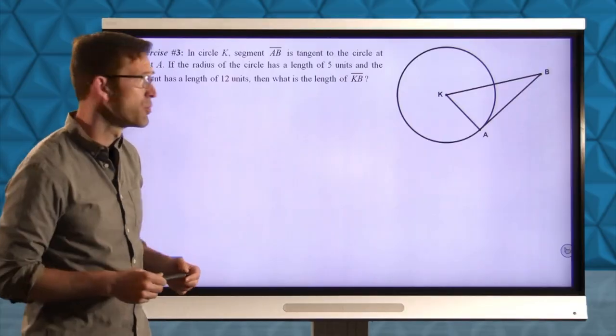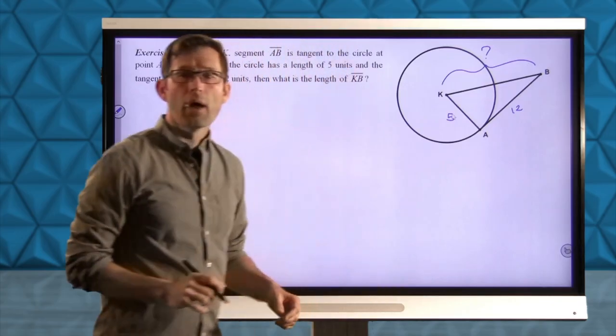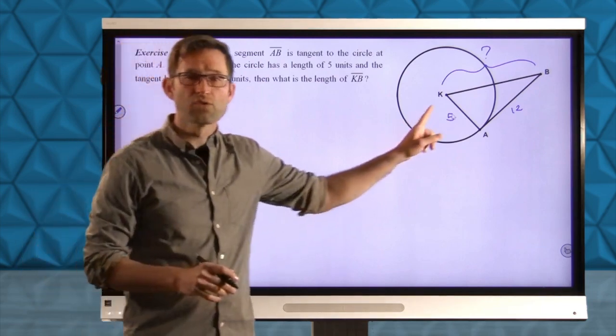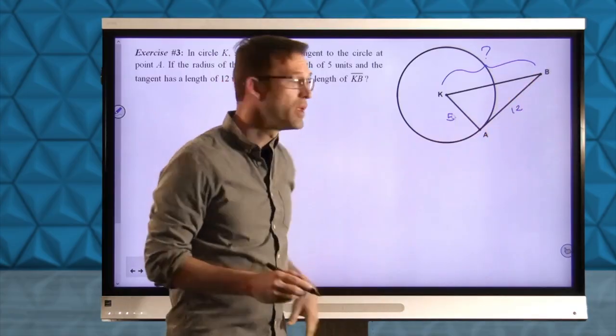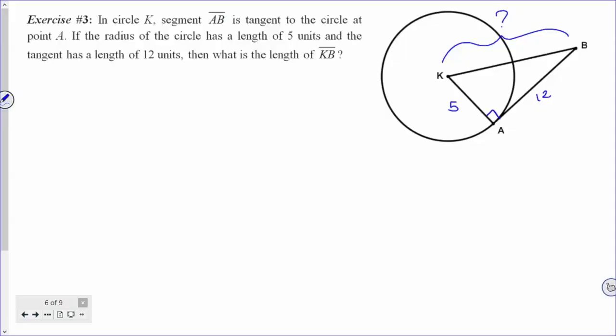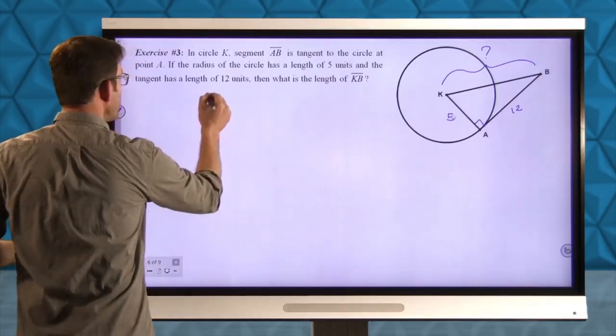Taking a look at a classic problem, exercise number three. In circle K, segment AB is tangent to the circle at point A. If the radius of the circle has a length of 5 units, and the tangent has a length of 12 units, then what is the length of KB? Well, again, the key here is the fact that this radius, AK or KA, is perpendicular to this tangent AB. So we can throw that little perpendicularity in. And what that now means, of course, is that triangle KAB is a right triangle. And if you absolutely need to, you could draw that right triangle separately. And that's never a bad thing.